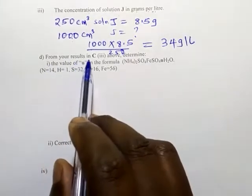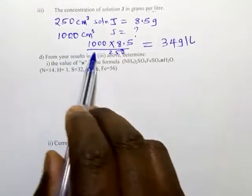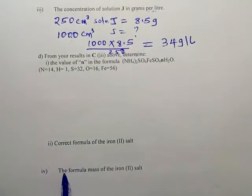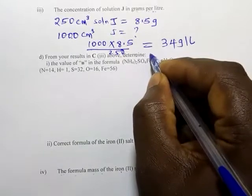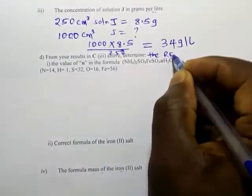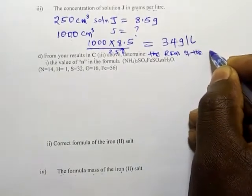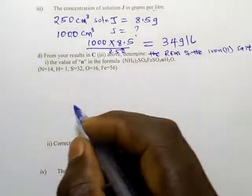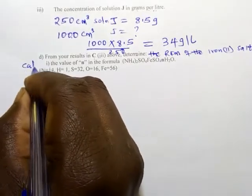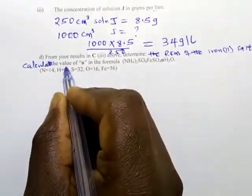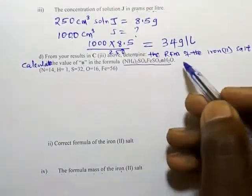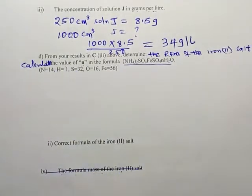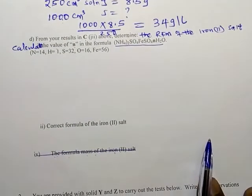Next, from the results in 3C above, determine the formula mass (RFM) of the iron salt, and hence calculate the value of N in the formula. Note this question is somewhat misplaced — it should come before the previous step. Let us see how to calculate the RFM using the relationship between molarity, RFM, and mass in grams per liter.